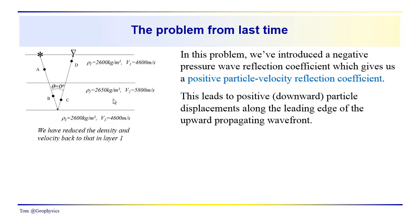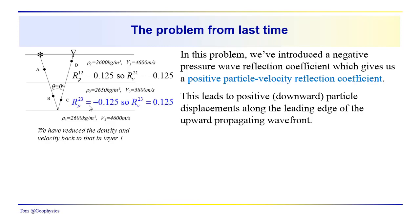In the problem we posed, the reflection coefficient for the pressure wave is 0.125 — a positive pressure wave reflection coefficient and a negative velocity wave reflection coefficient. So the particle velocities start off moving in the negative or upward direction as pressure increases. Coming down to the second interface, the pressure wave reflection coefficient is negative and the particle velocity wave reflection coefficient is positive. This leads to positive downward particle displacements along the leading edge of the upward propagating wavefront.